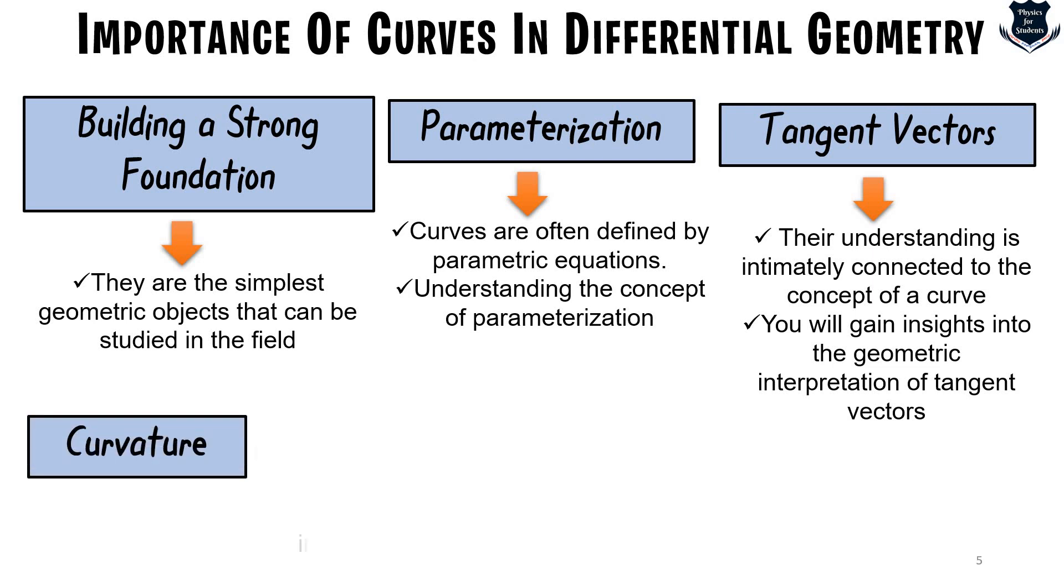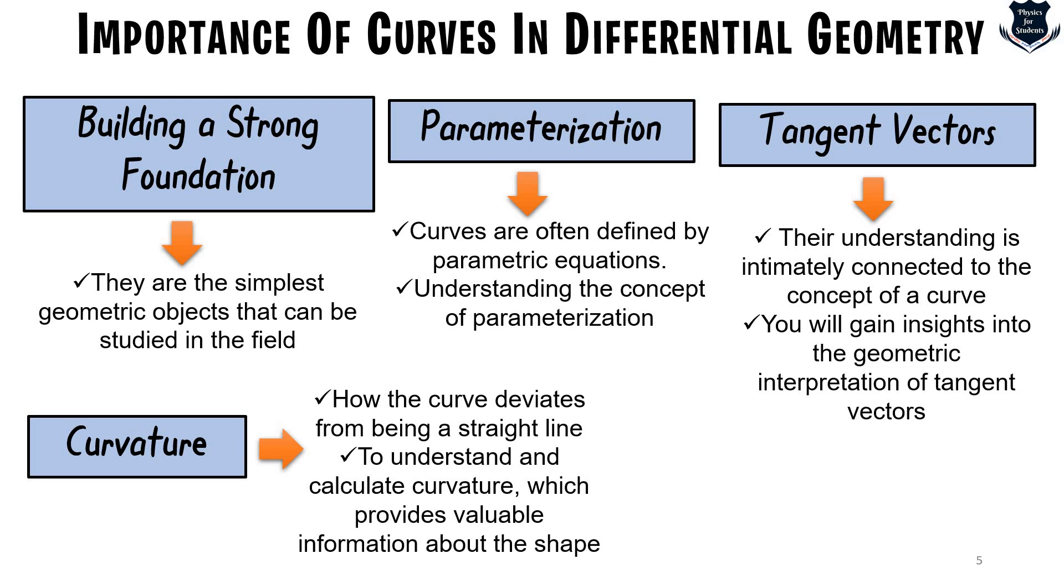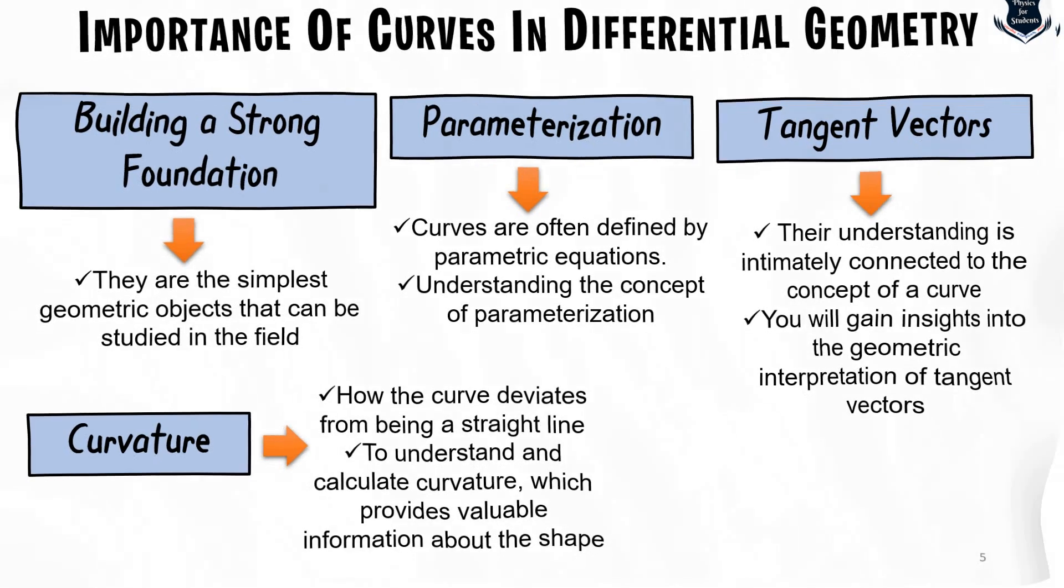The fourth one is curvature. Curvature is basically very fundamental geometric property associated with curves. It measures how the curve deviates from being a straight line. Learning about curves allows you to understand and calculate curvature which provides valuable information about the shape, smoothness and bending behavior of the curve. Curvature is a very key concept in many areas of mathematics and its applications are many in terms of physics and engineering.